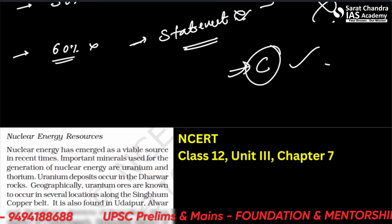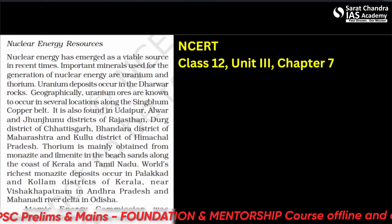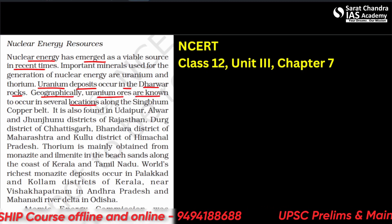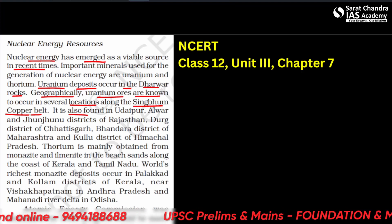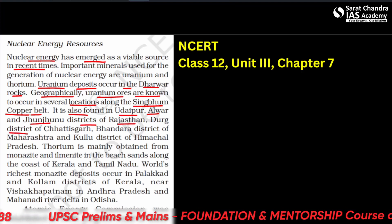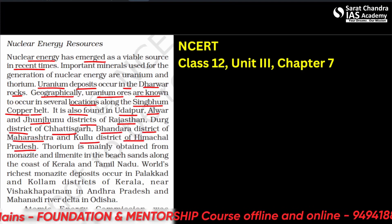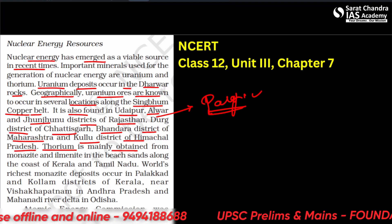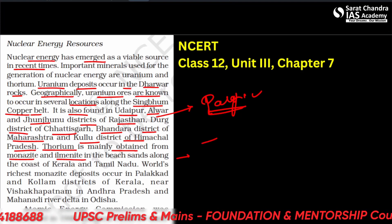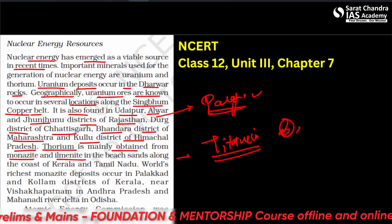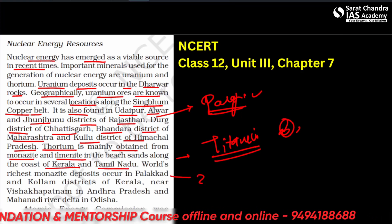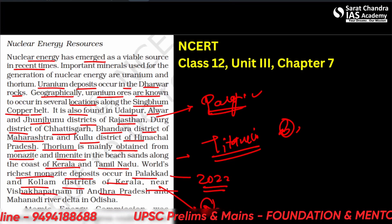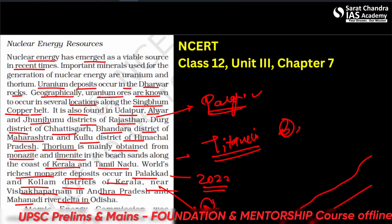From the NCERT perspective, nuclear energy has emerged as a viable source. Uranium deposits occur in the Dharwar rocks. Uranium ores are known to occur in several locations along the Singhbhoom copper belt, and also in Udaipur, Alwar, and Jhunjhunu districts of Rajasthan, Durg district of Chhattisgarh, Bhandara district of Maharashtra, and Kullu district of Himachal Pradesh. Thorium is mainly obtained from monazite and ilmenite in beach sands — ilmenite is also an ore for titanium. The richest monazite deposits occur in Palakkad and Kollam districts of Kerala, near Visakhapatnam in Andhra Pradesh, and the Mahanadi river delta in Odisha.